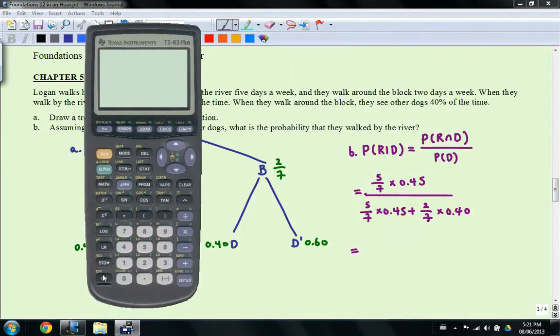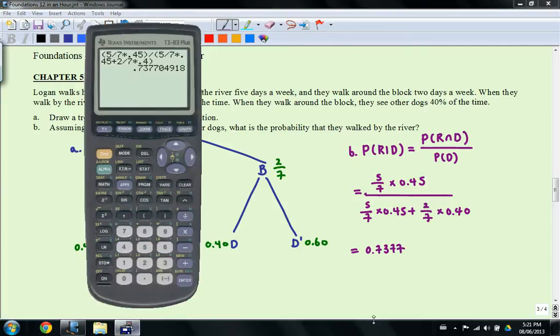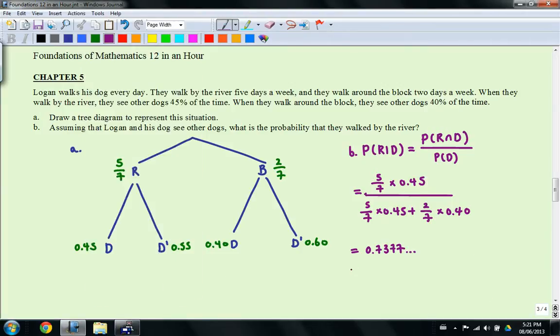So this would be 5 sevenths times 0.45 plus 2 over 7 times 0.4. So you can actually punch this on your calculator. If you use brackets, you can actually do this all at once. So I'm going to show you what that looks like. So 5 over 7 times 0.45, close bracket, divided by brackets 5 over 7 times 0.45 plus 2 over 7 times 0.4. So it's going to do that on one go and you're going to get 74%. So this will be 0.7377 and so forth. And if you round up, this will be just 74%.